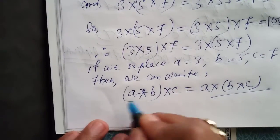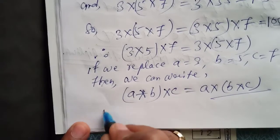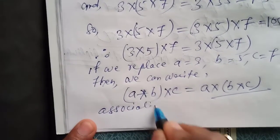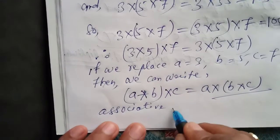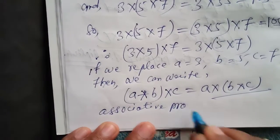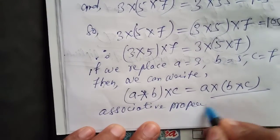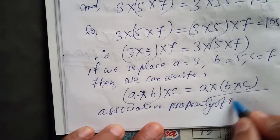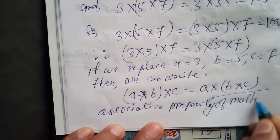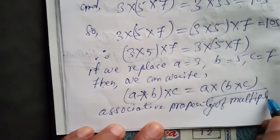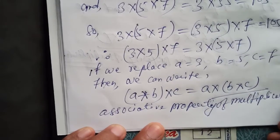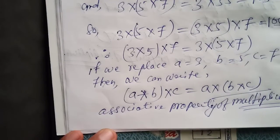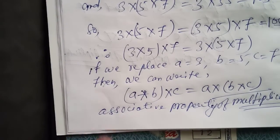This is known as the associative property of multiplication. I hope you like this video. Please like and share it with your friends.